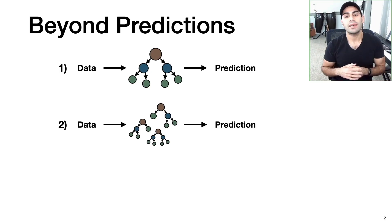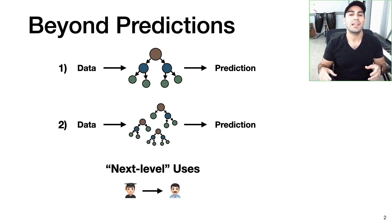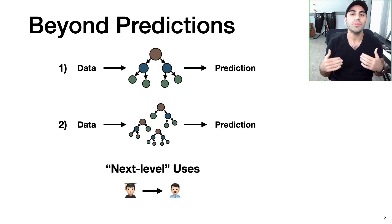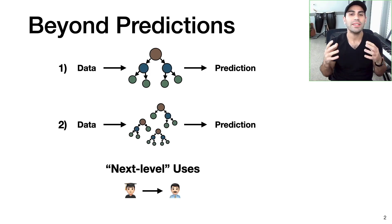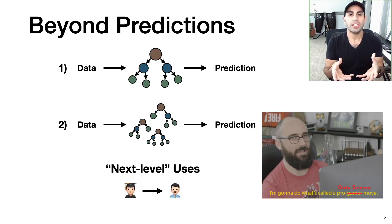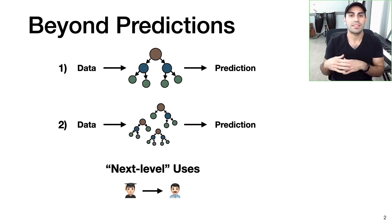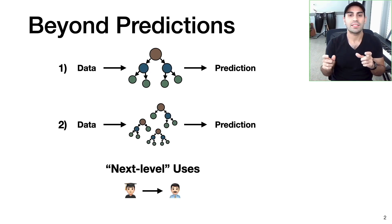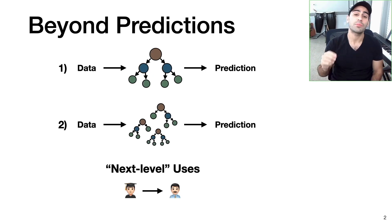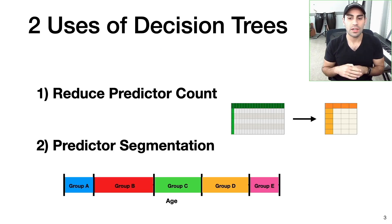The whole point of the discussion today is that we can use machine learning models, specifically decision trees, for more than just making predictions. I'll call these next level uses of decision trees — not because they're anything profound or groundbreaking, but because they go beyond the obvious task of using a model to make a prediction. For those just getting started in data science, it may be easy to think that all there is is getting some data, training a model, and making predictions. The reality is it's not so straightforward. What I really like about data science is the critical thinking and creativity required to use these tools to solve real world problems and provide value. That's all I mean by next level.